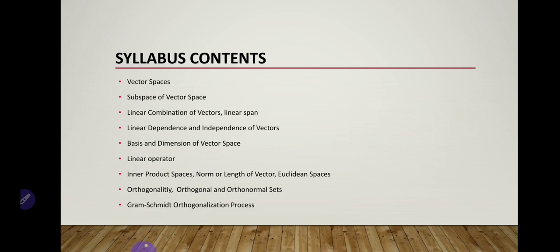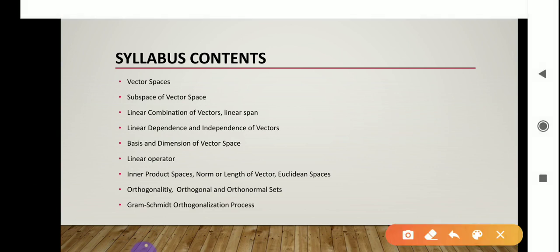After basis and dimension, we have linear operator — this part is related to vector space. Then the next topic of this unit is inner product spaces. In inner product spaces we have to find norm and length of vectors, then Euclidean space, orthogonality, orthogonal and orthonormal sets, and the last topic is the Gram-Schmidt orthogonalization process.